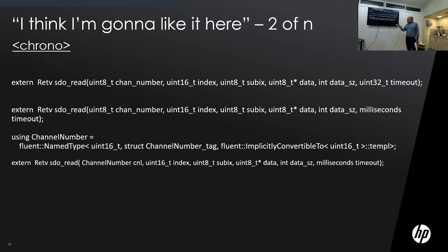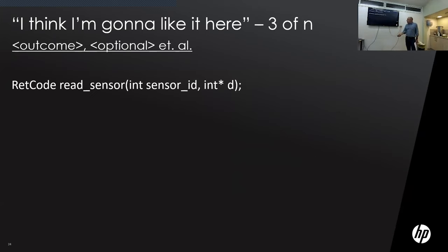Regarding the problem of multiple integer parameters that can be passed in the wrong order, I use the NamedType library — also called the Fluent library. I can use it to define a named channel number type, and then there's no way an integer becomes a channel number without explicit casting. This improves code quality and reduces bugs. Two simple tools: Chrono and strong named types.